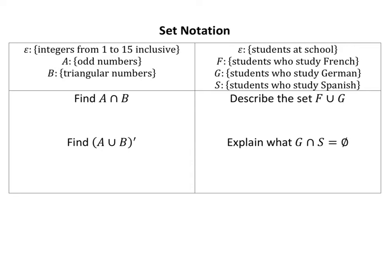We've got A is odd numbers. I'm not going to list them out. Triangular numbers I will - you ought to know these actually. So 1, 3, 6, 15.